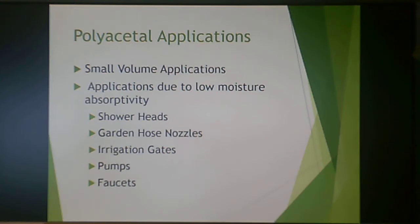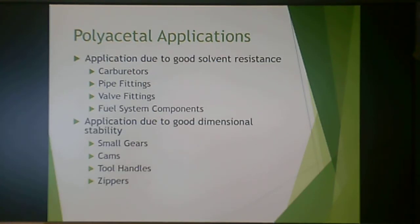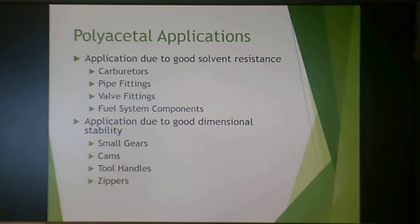Polyacetal is well suited for small volume applications and those exposed to moisture, since it absorbs very little water. Examples include shower heads, garden hose nozzles, irrigation gates, pumps, and faucets. Its solvent resistance makes it good for carburetors, pipe fittings, valve fittings, and fuel component systems. Its dimensional stability lends it to small gears, cams, tool handles, and zippers.